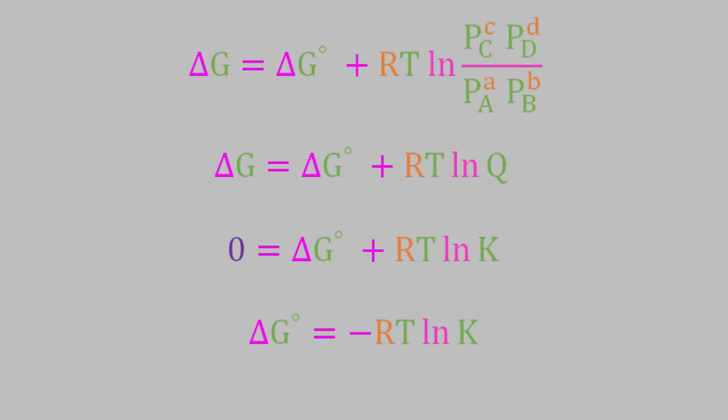So this tells us that at equilibrium, the standard Gibbs free energy, that is the Gibbs free energy at standard pressure, is equal to negative RT logarithm of K. That's an equation you may also have learned in general chemistry.